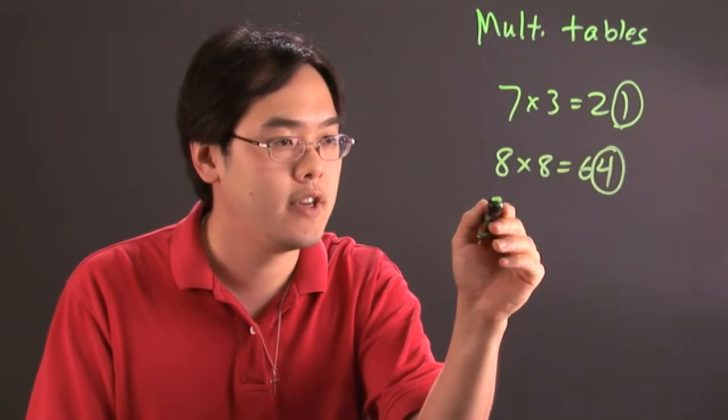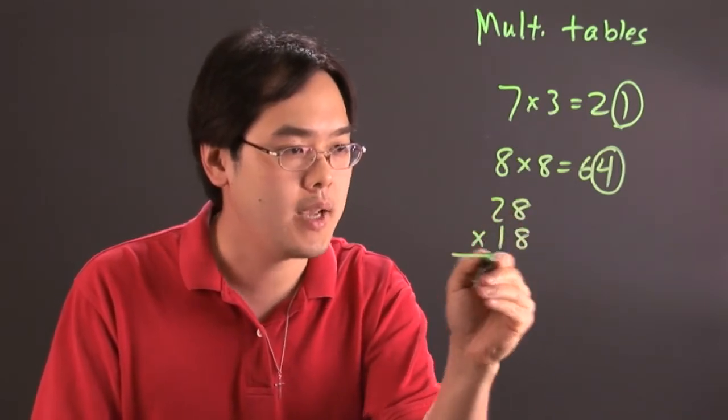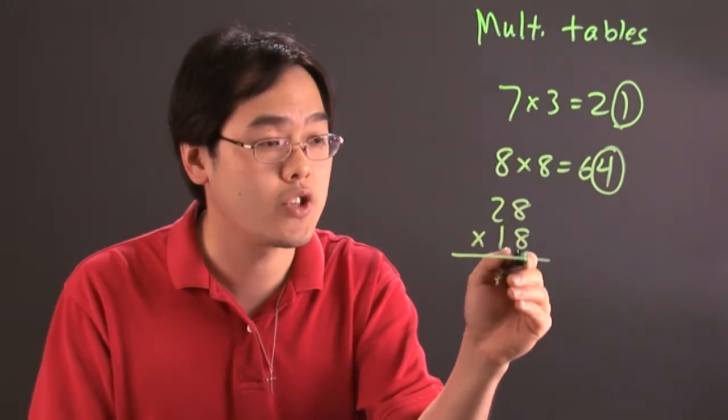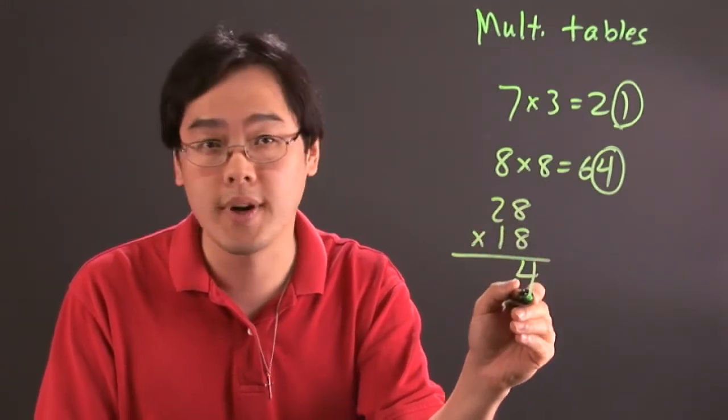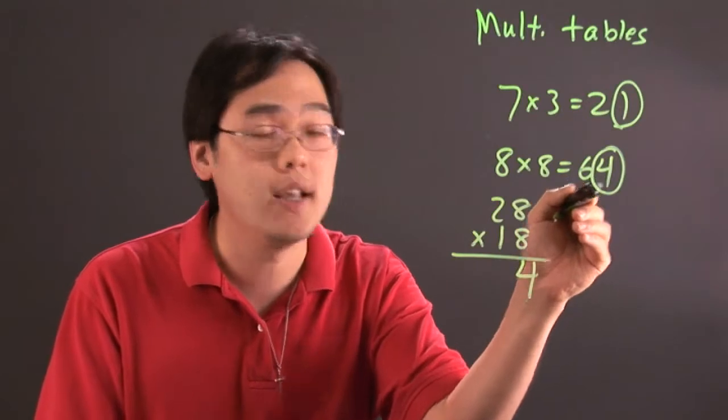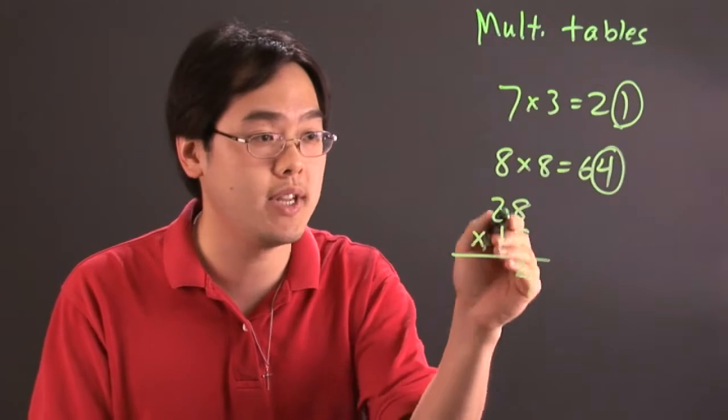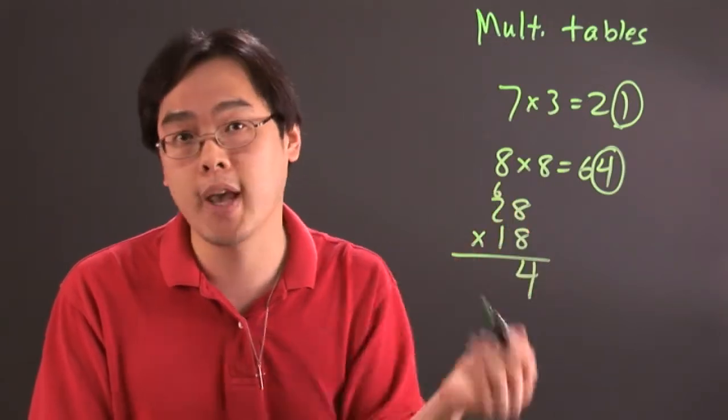So, for example, if you have 28 times 18, you're going to start out with 8 times 8, which is going to give you 64, and you have the 4 here. That's a guarantee because as you work the rest of the problem out, the 4 will end up staying put, and then you're going to continue with the rest of the multiplication problem.